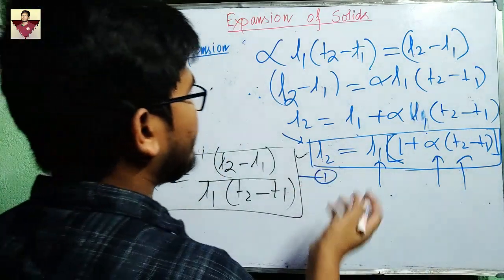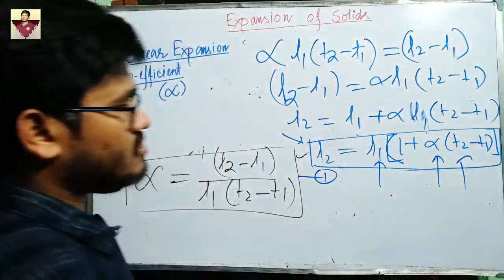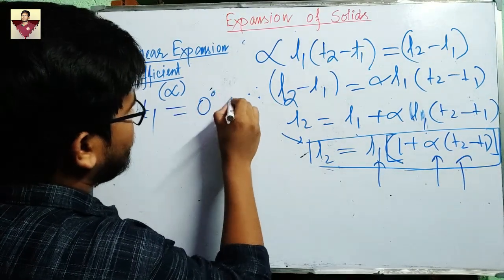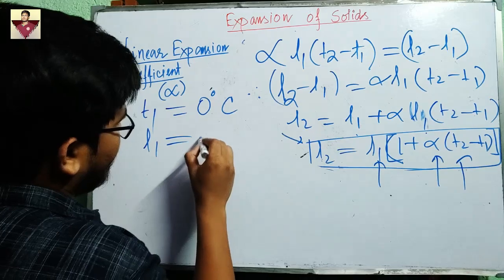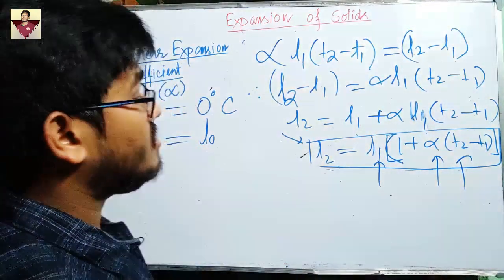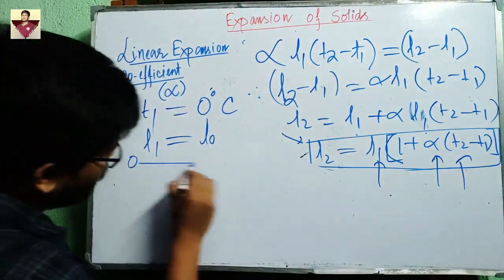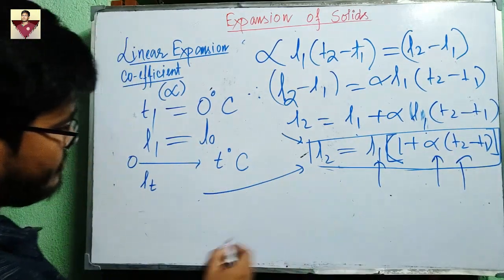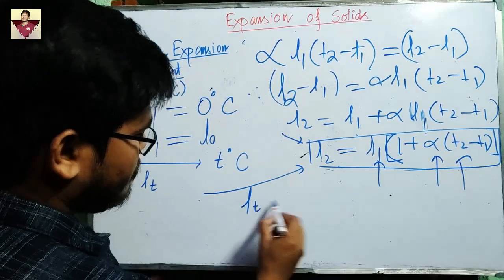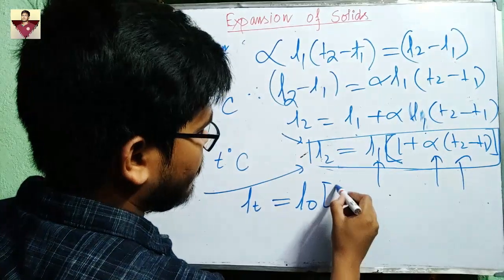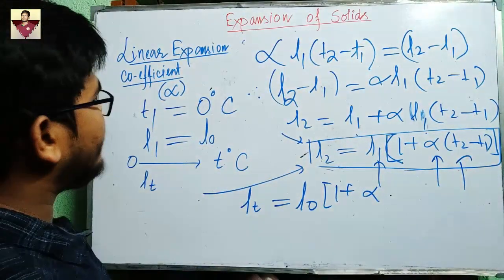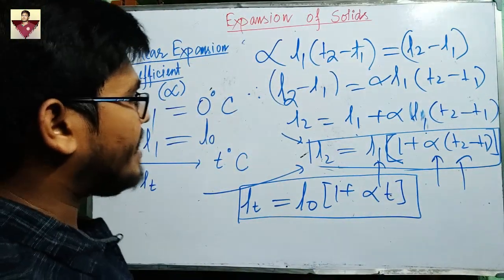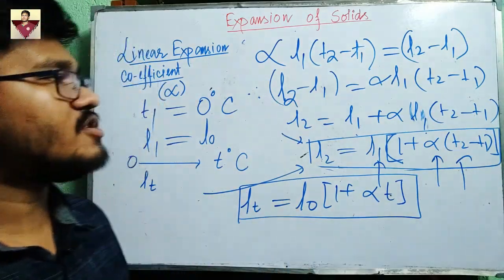A useful special case: if your initial temperature T1 is 0°C and the initial length is L0, and you increase the temperature from 0 to T degrees Celsius with final length Lt, then the equation becomes: Lt equals L0 times (1 plus alpha times T). This is the equation to use when increasing temperature from 0°C. Remember these equations to solve mathematical problems.